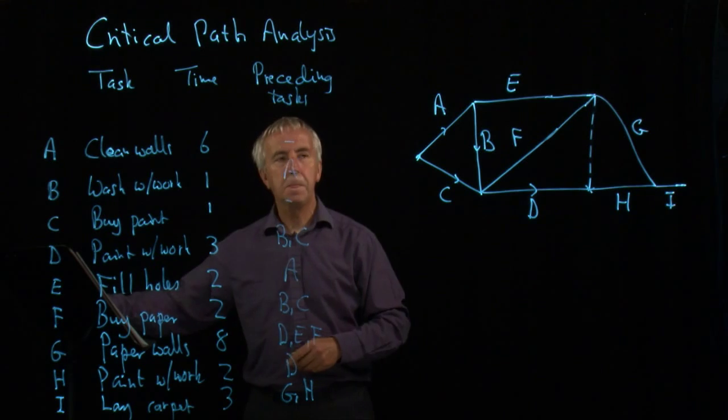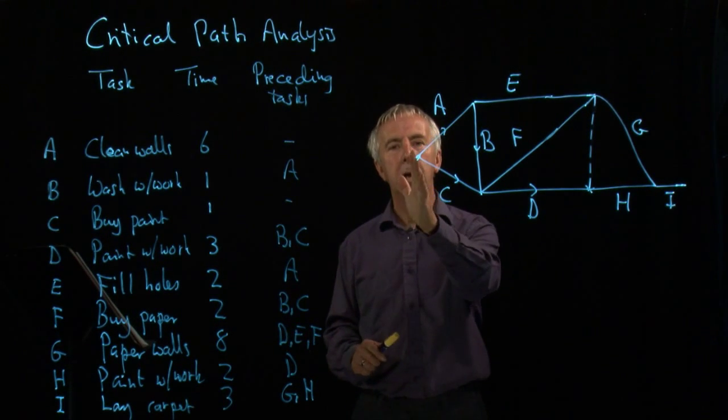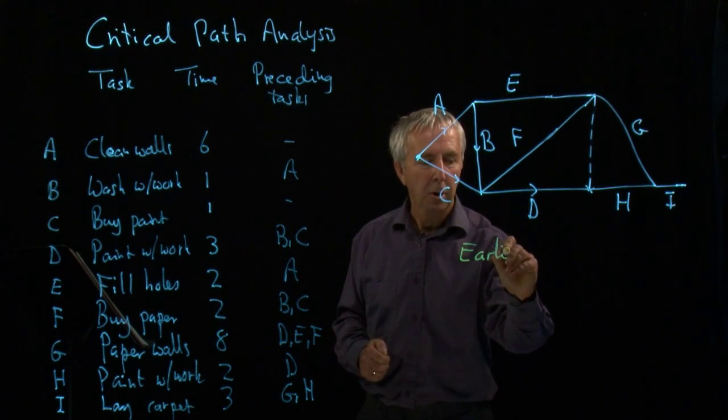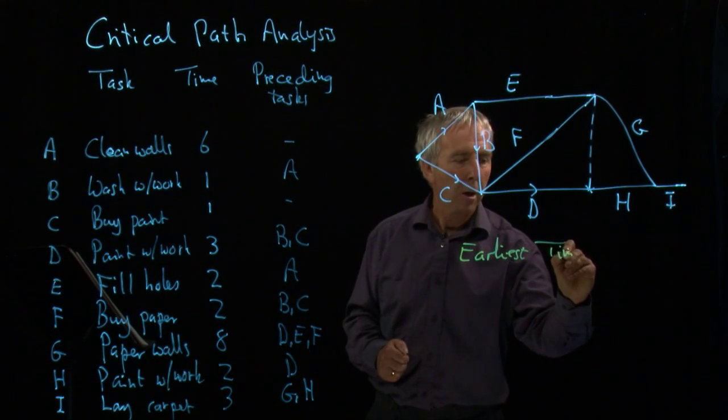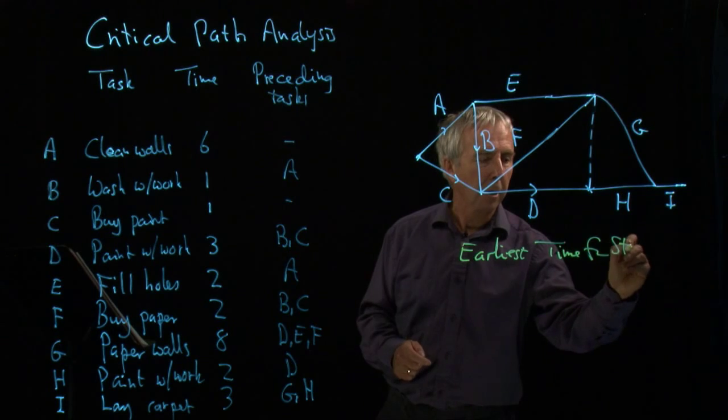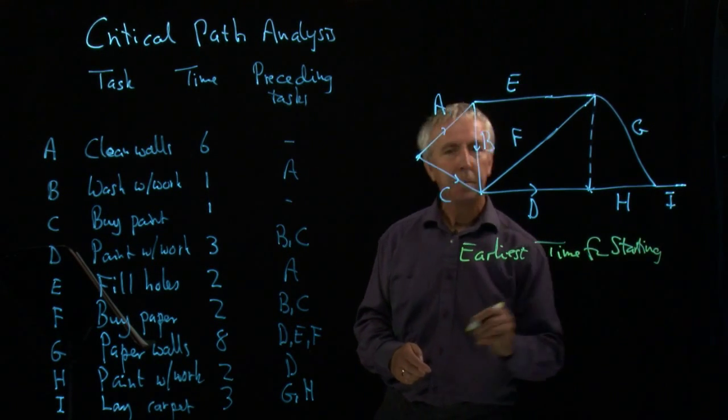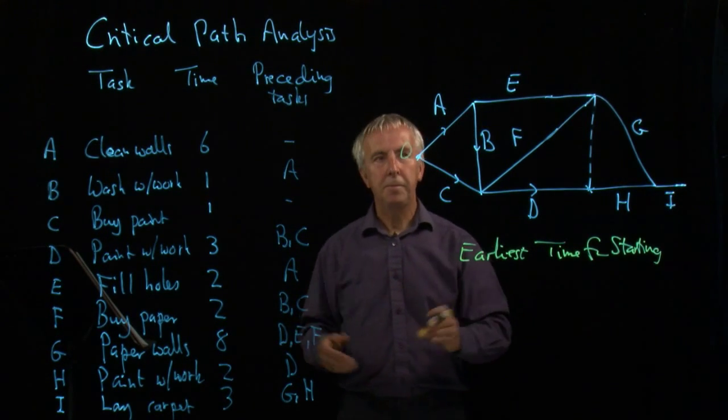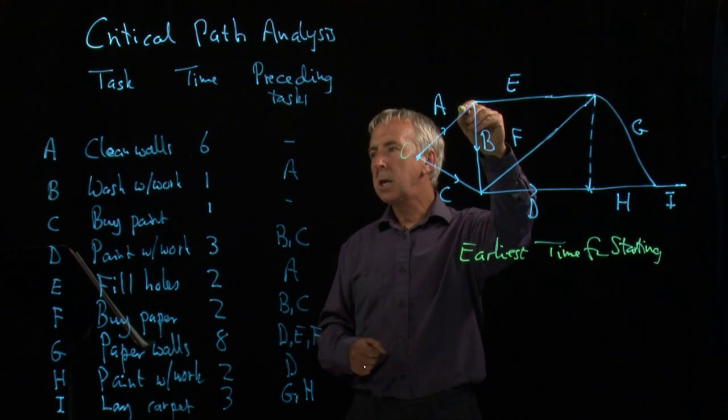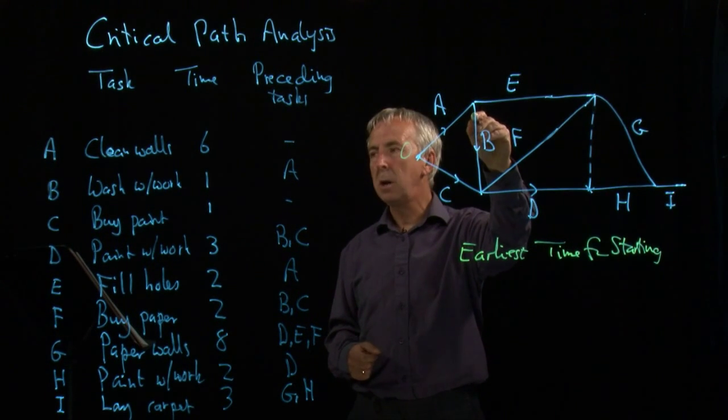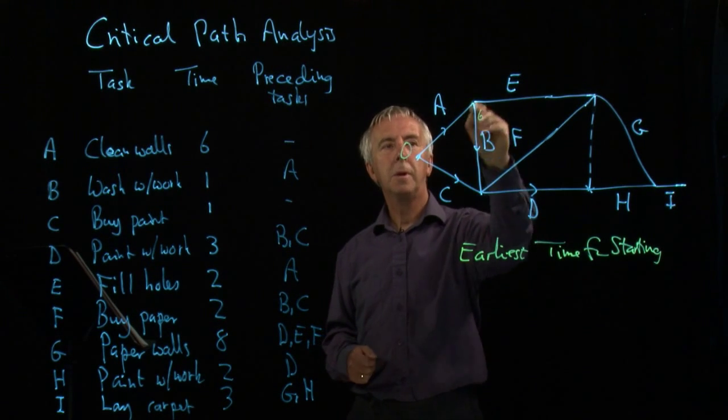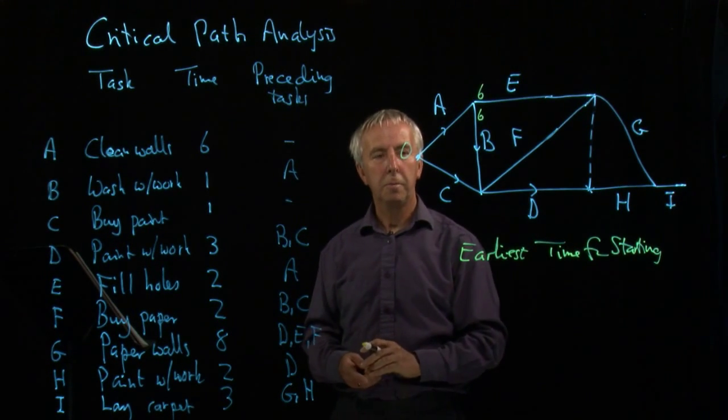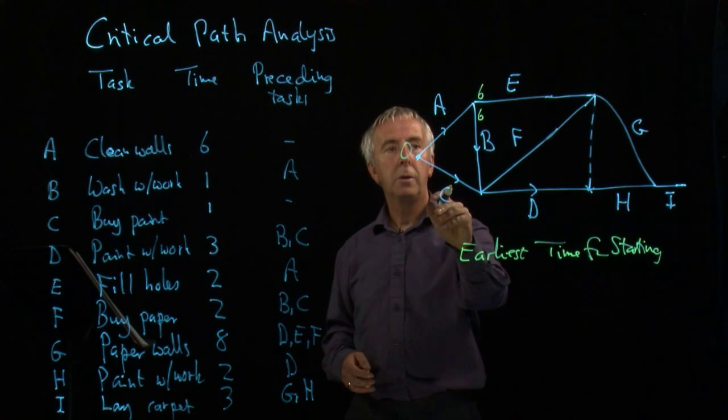The best way to do that is to work through from the beginning here, to find out what we call the earliest starting times of each activity. And it's times for starting. Now, the earliest I can start A is zero, just when I begin. A takes six hours. So the earliest that I can start B is after six hours, and equally for E, because I can't do either of those until A has finished.